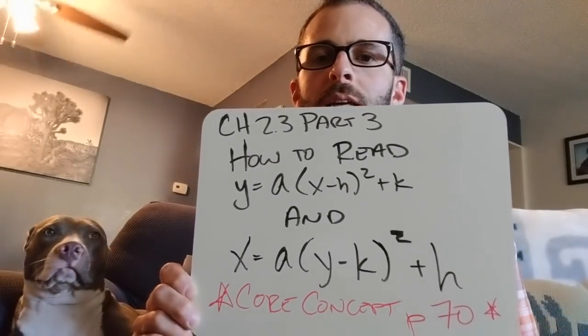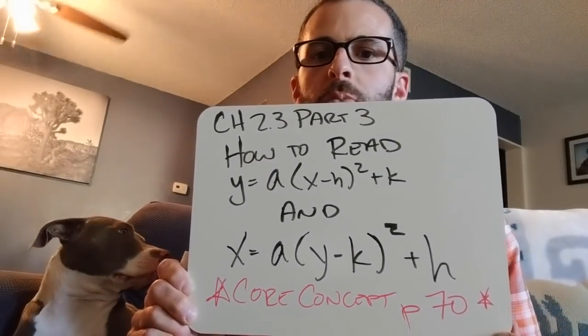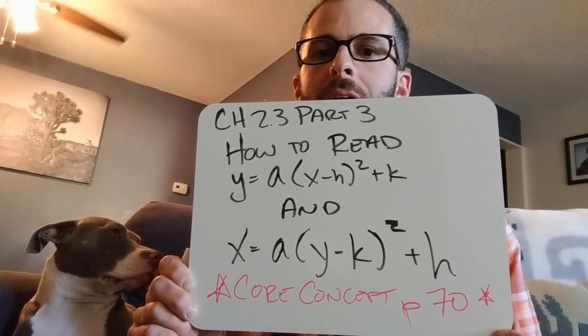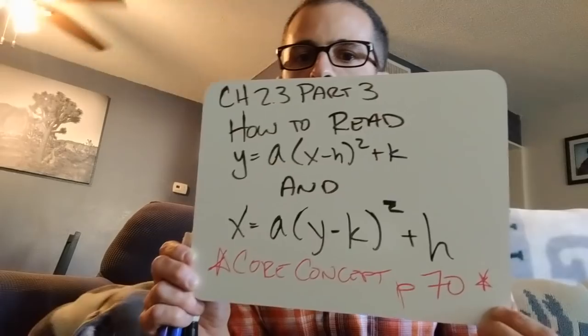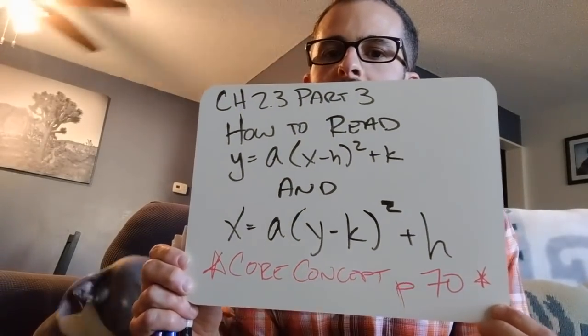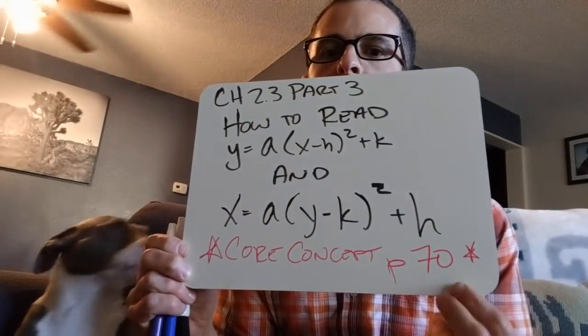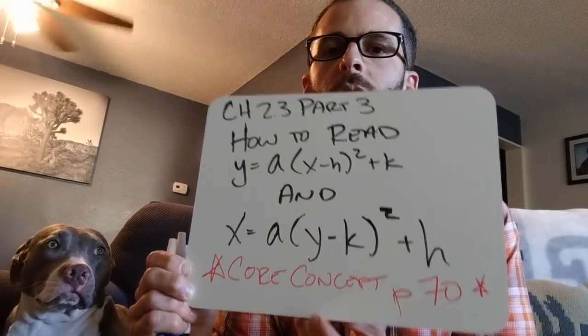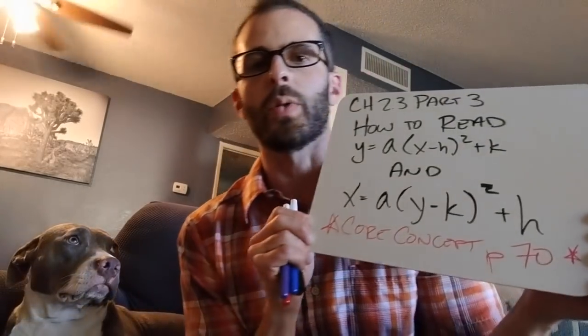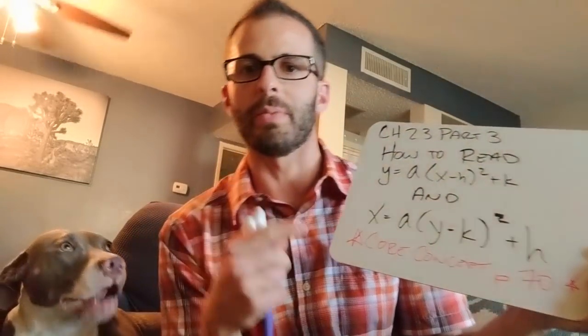All right, I'm going to show you how to read y equals a times the quantity x minus h squared plus k and x equals a times the quantity y minus k squared plus h and you need to be on page 70. Copy down the core concept and follow along. And sorry, it's kind of weird because I can see myself and everything is backwards on my video screen.